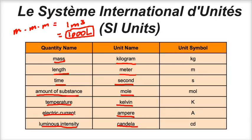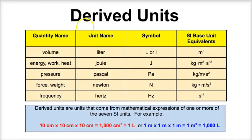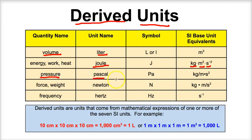The SI derived units are units derived from the seven main base units. Volume, or the liter, is a derived unit. When we measure energy, work, or heat, we use joules — another derived unit derived from three of the seven main SI units. Pressure uses the Pascal, also derived from three main units. Force and weight use the Newton, derived from three main SI units. Frequency uses the hertz, derived from one of the seven main units.